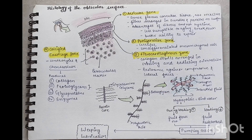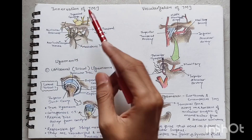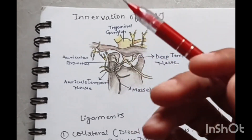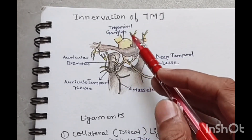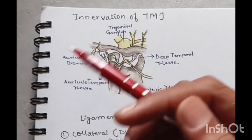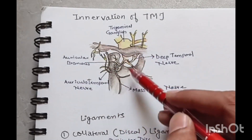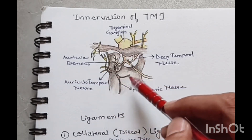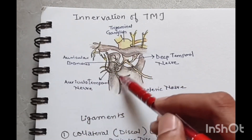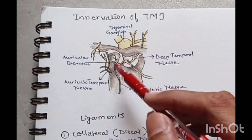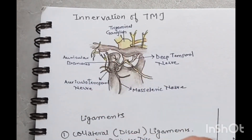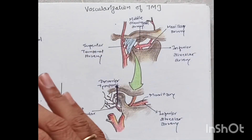Now let's understand the anatomy of the TMJ. First, the innervation: the TMJ is innervated by the trigeminal nerve (cranial nerve V), mainly the mandibular branch. The main nerves are the auriculotemporal branch of the mandibular nerve and the auricular branch. Other branches of the masseteric nerve and deep temporal nerve also supply the TMJ.